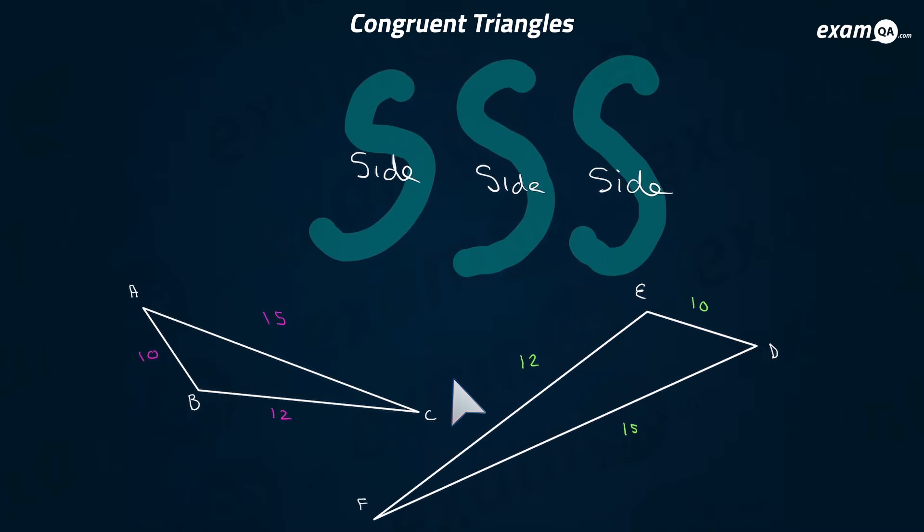Here we've got AB is the same as DE, BC is the same as EF, and AC is the same as DF. We've shown that three sides are the same. Therefore, these two triangles must be congruent.